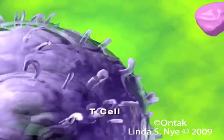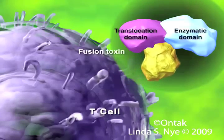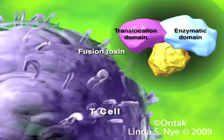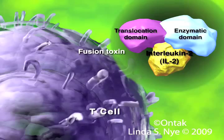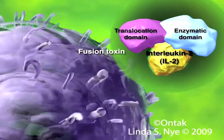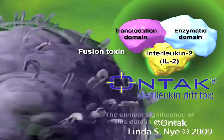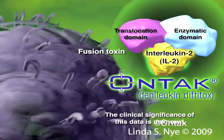A different type of targeted therapy is a fusion toxin. Instead of impacting a cell by disrupting signal transduction, fusion toxins are designed to kill the targeted cell directly. An example of one such fusion toxin is the interleukin-2 diphtheria toxin fusion protein, ONTAC.